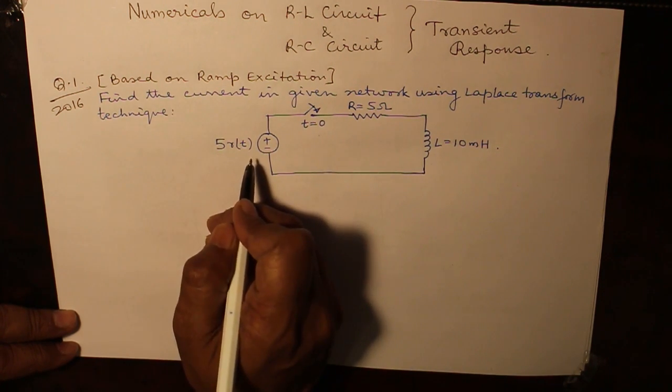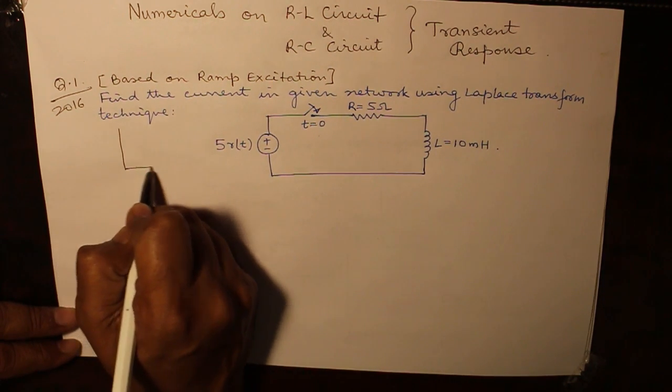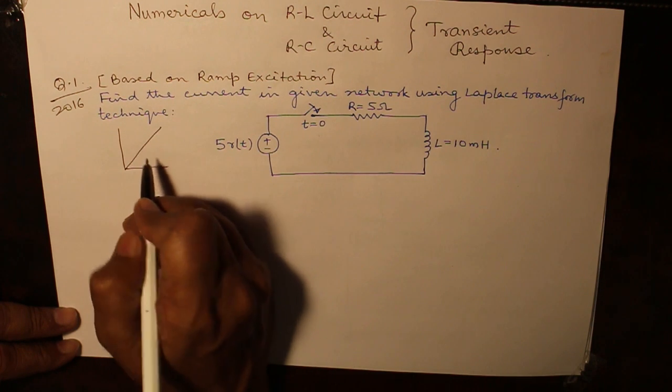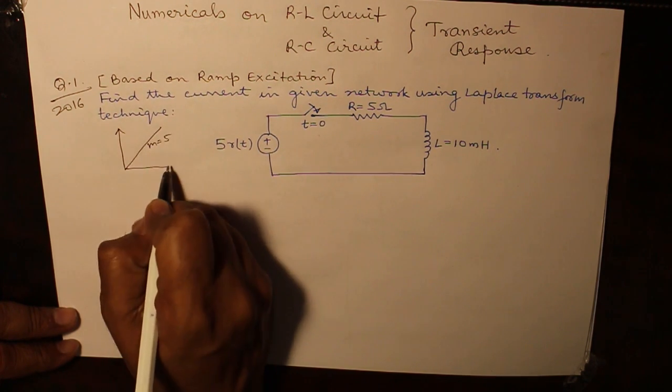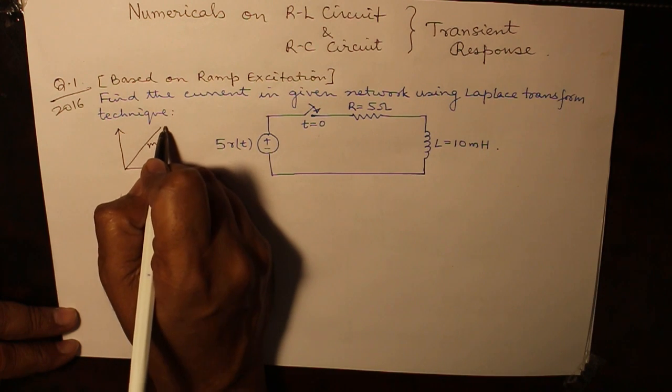Now the input is 5RT. As you know, 5RT means it is having a slope of 5 and this function is known as 5RT.